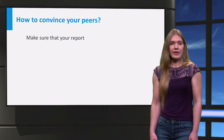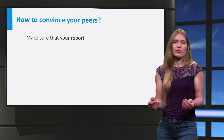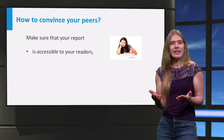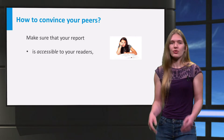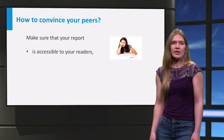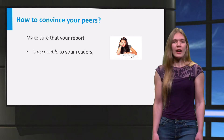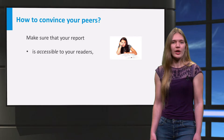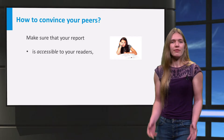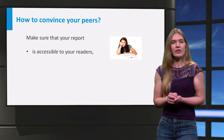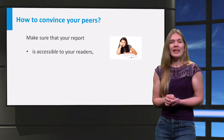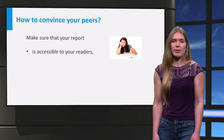To convince your peers, they need to actually read your report. So the first step is making it accessible and pleasant to read. We will do some exercises on how to use layout and structure to guide your readers through your report. It should be very clear what problem you have studied, why this is of interest and how your research solves this problem.